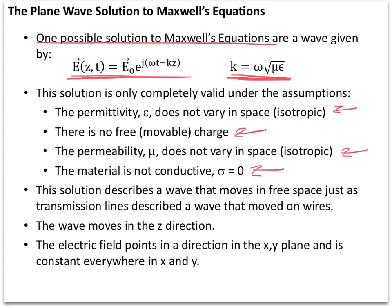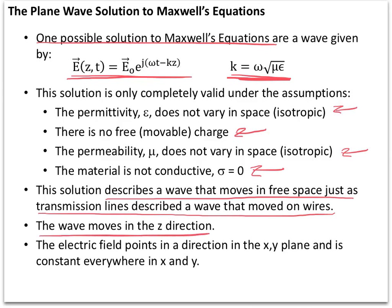This solution describes a wave that moves in free space exactly the way waves moved on transmission lines or wires. We've essentially realized that we don't need a wire to carry an electric signal — electric and magnetic fields can carry signals through space. We know this in real life because we can listen to the radio, but it's good to put this in a more mathematical format. We've assumed the wave moves in the Z direction and that the electric field points in some direction in the XY plane but has a constant value everywhere in X and Y — simplifying assumptions that allow us to come up with a solution that's actually pretty easy.